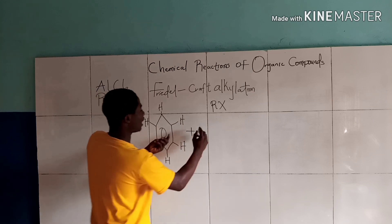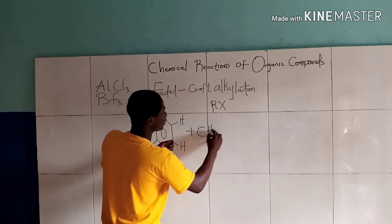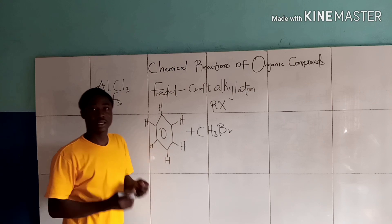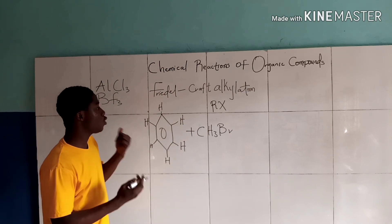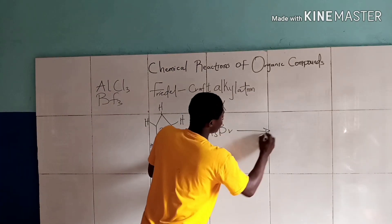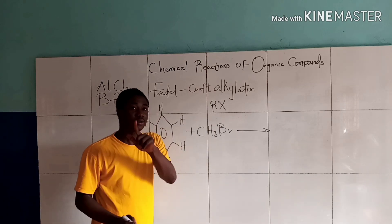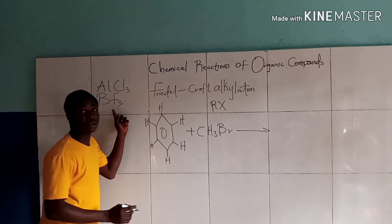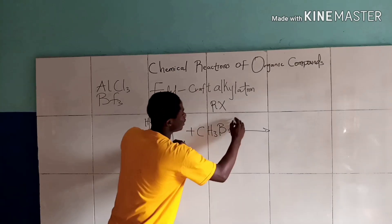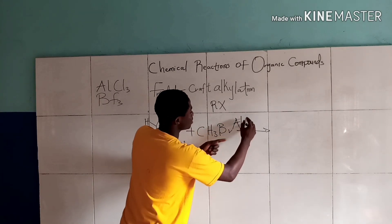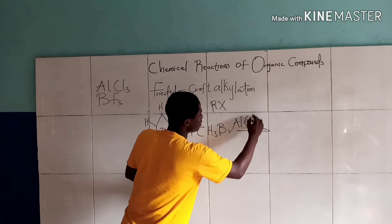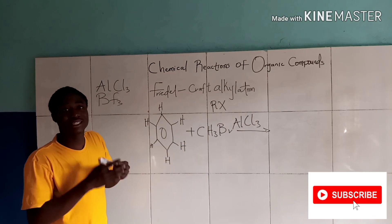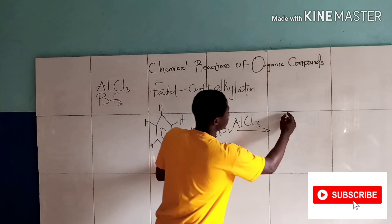So what will simply happen here? CH₃Br is an example of a haloalkane. This reaction is carried out in the presence of a Lewis acid catalyst. Let's take an example using AlCl₃ — Aluminium Chloride. So what we get as our product is simply this.